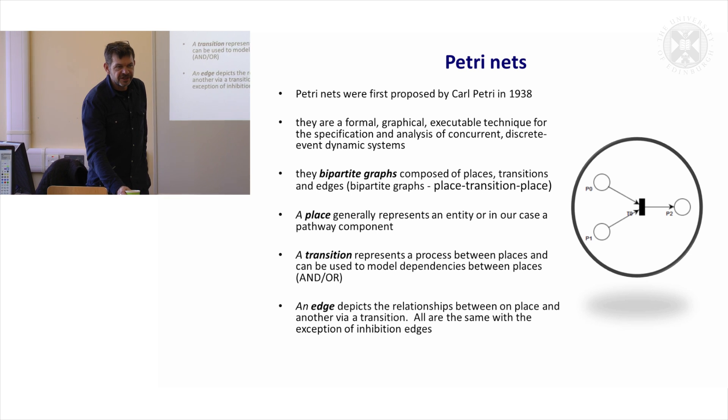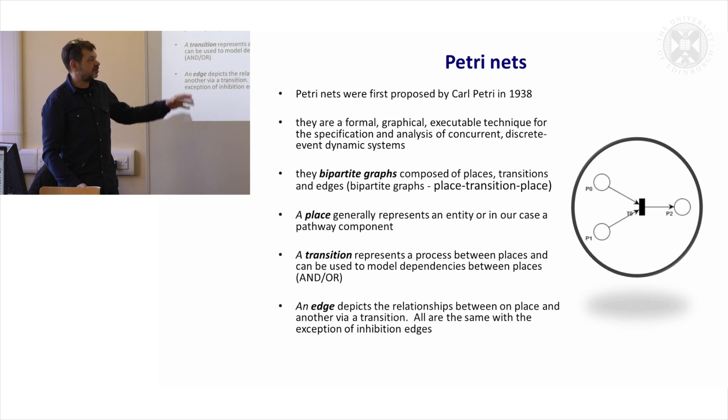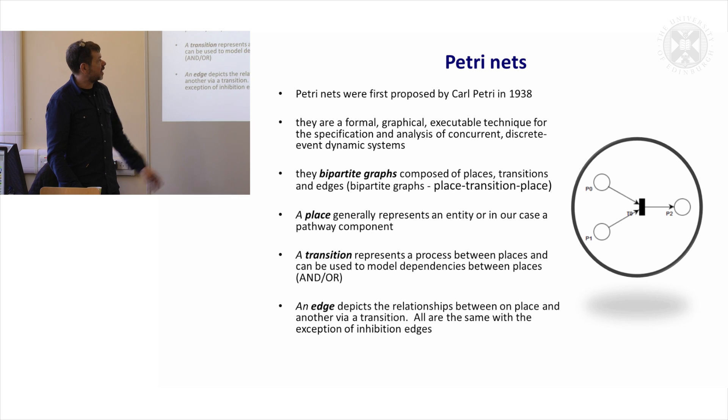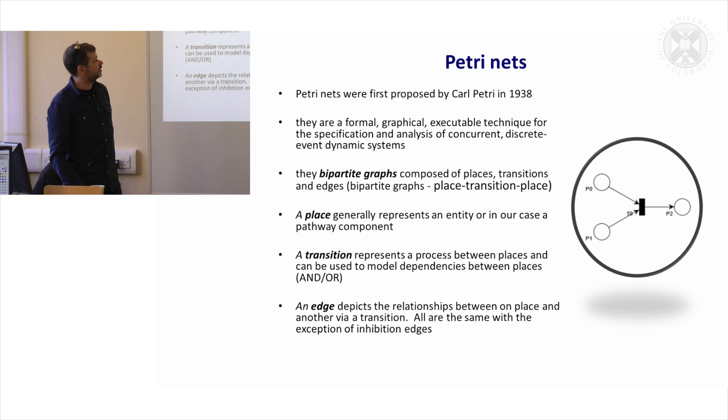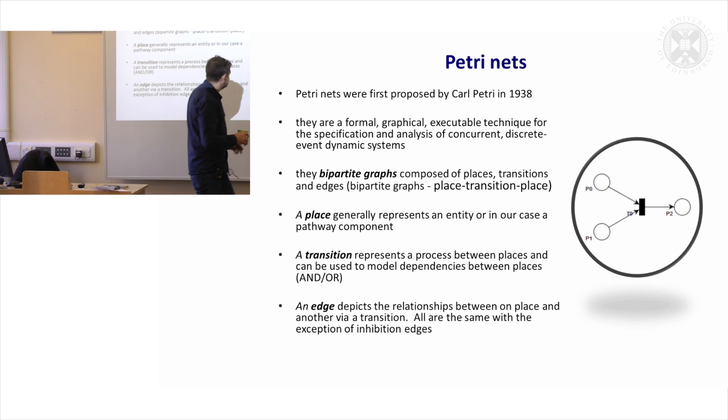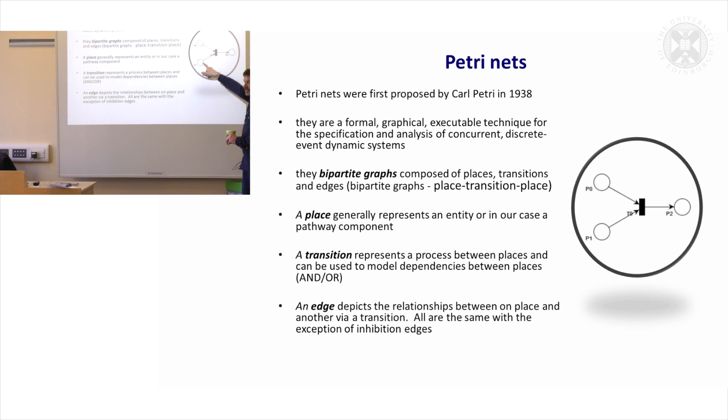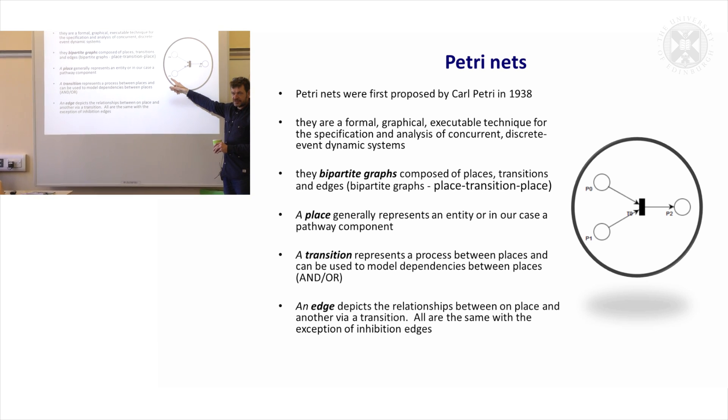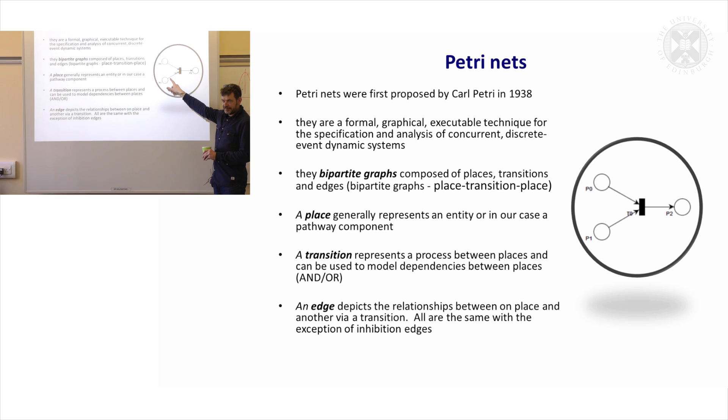I suspect none of you have heard of Petri nets, so this is a formalized modeling language which goes back 30 or 40 years. Generally what we have in Petri nets is this idea of places which are generally drawn as a round circle and transitions.